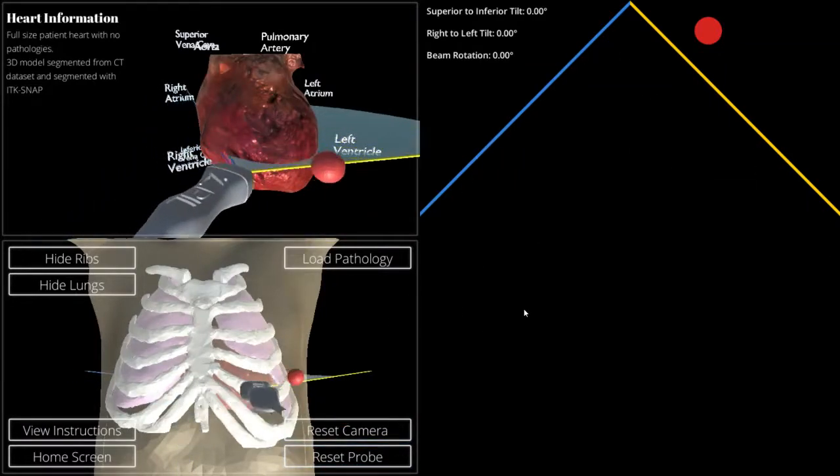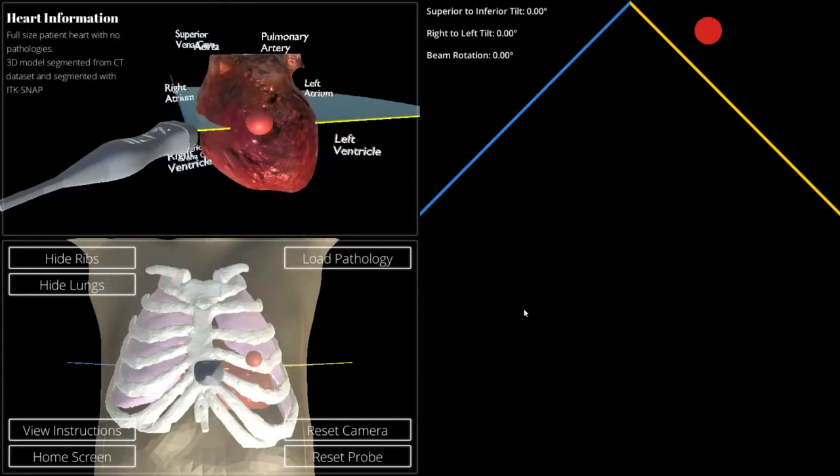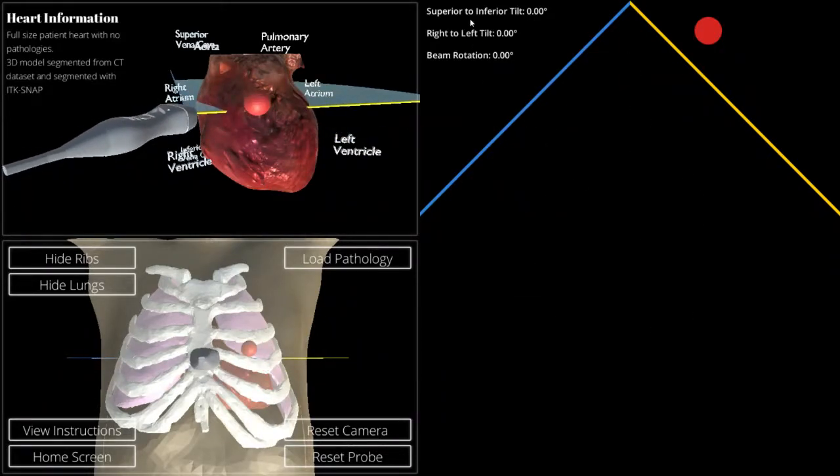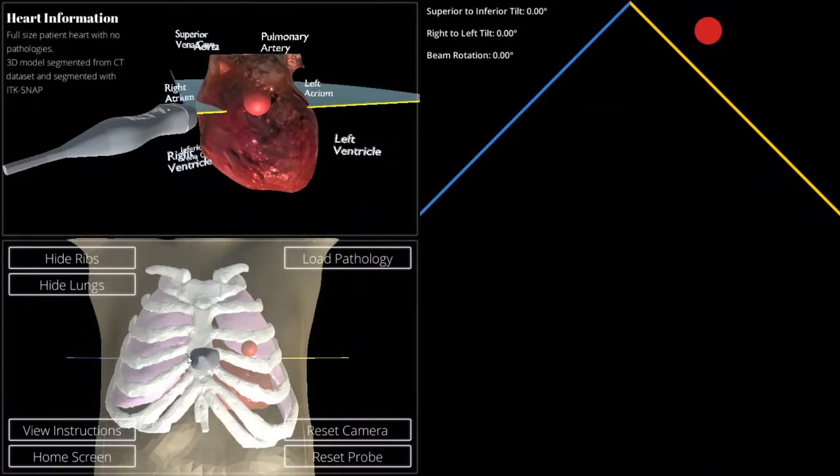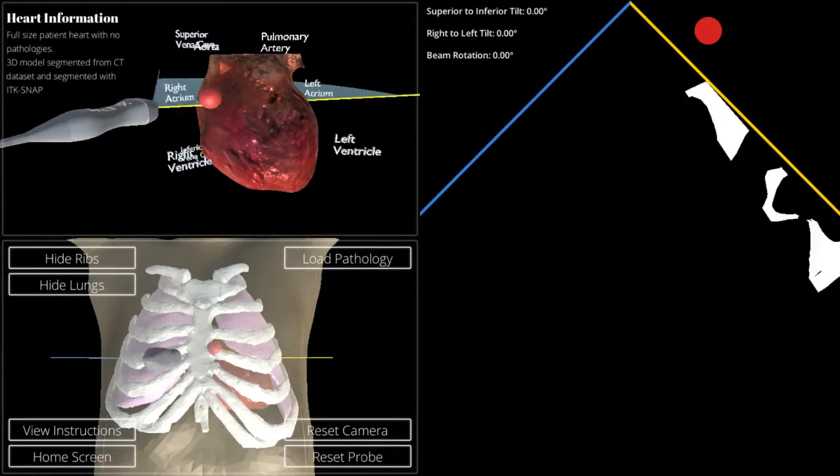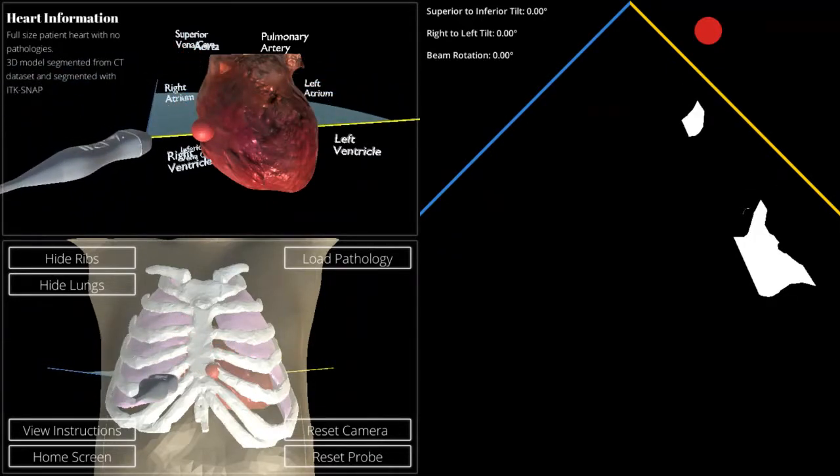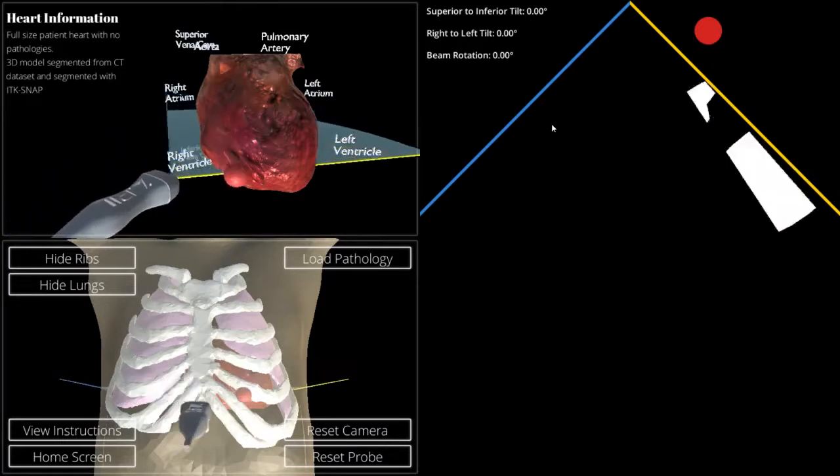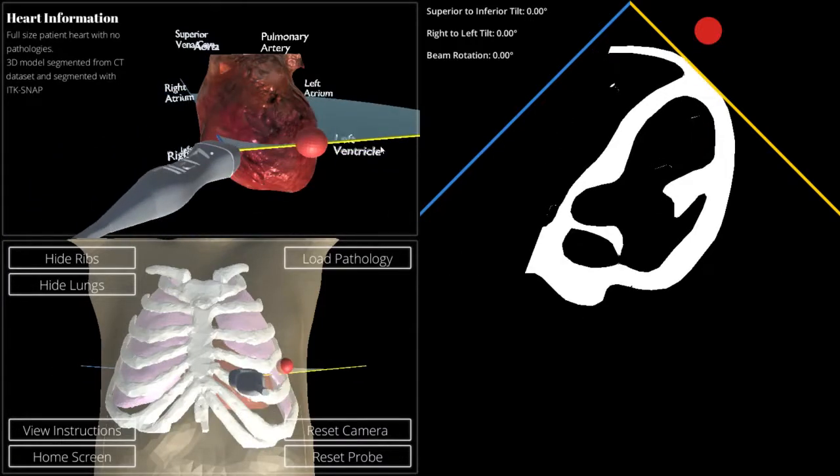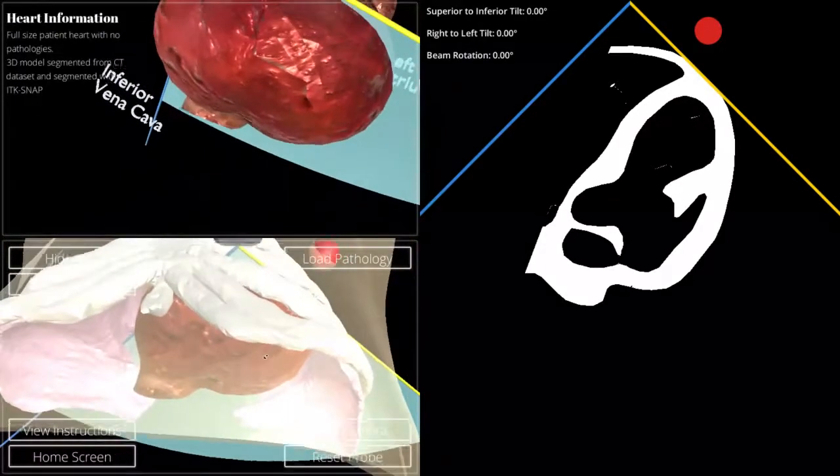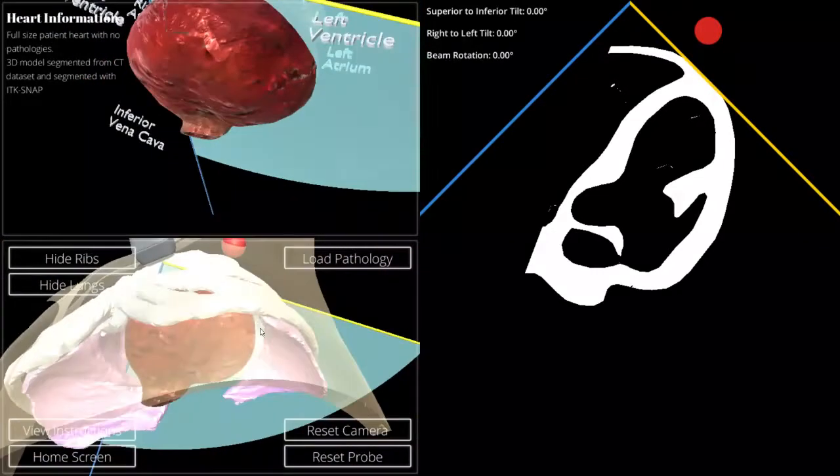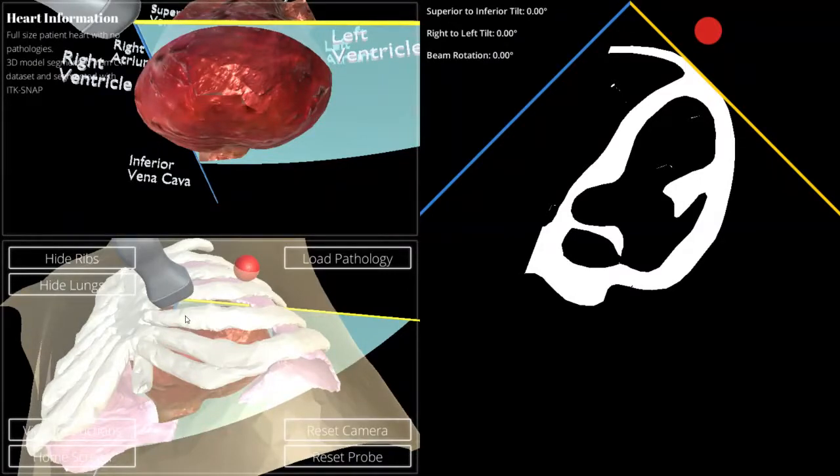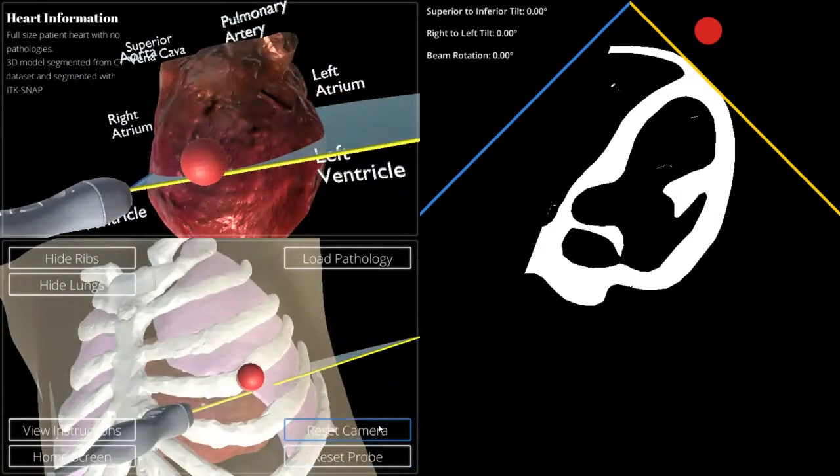Now we can start to get into some of the features here. As we pass over the ribs, there is nothing on our ultrasound window on the right-hand side of the screen. Our readings are at 0 degrees inferior to superior tilt, right to left tilt, and beam rotation. As we begin to move, however, we can see that there are flashes of images on this screen. Those flashes basically indicate that the ultrasound beam is passing through some portion of the person's chest. This is happening because this ultrasound beam is being dynamically generated at runtime and being occluded by the ribs and the lungs, as you would expect in a real ultrasound examination.